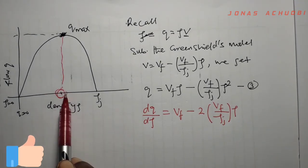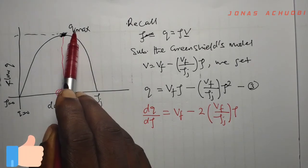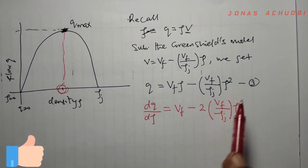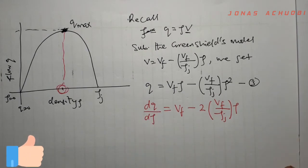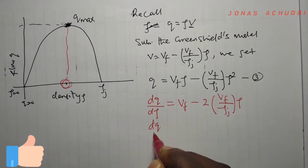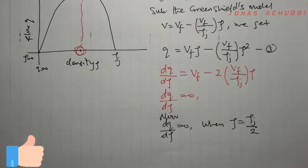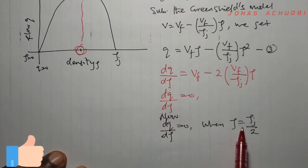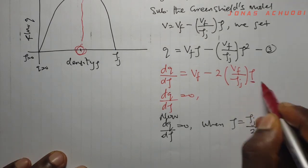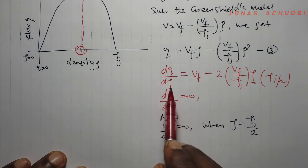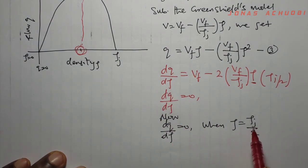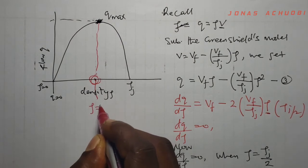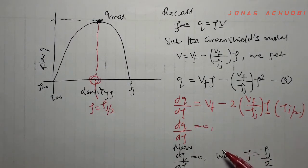To find the critical value — the density at which the flow rate is maximum — we set the first derivative dQ/dρ equal to zero. We observe that dQ/dρ equals zero when ρ = ρJ/2. Replacing ρ with ρJ/2 makes the derivative zero, which means ρ = ρJ/2 is the critical value. At this point, the first derivative is zero.